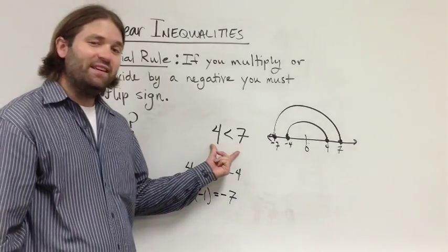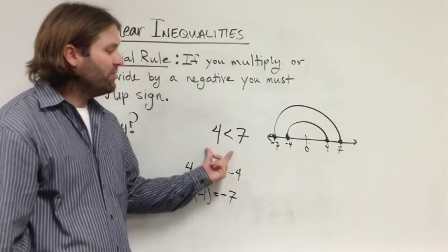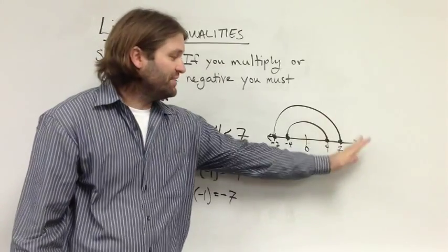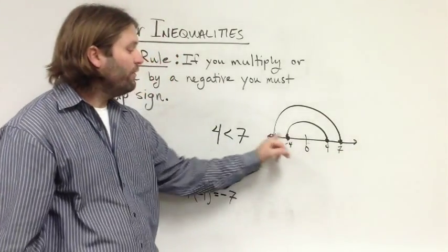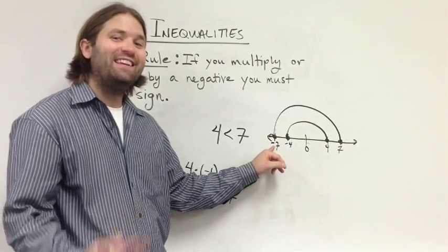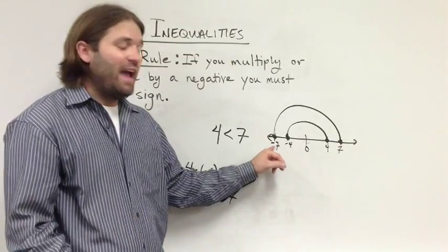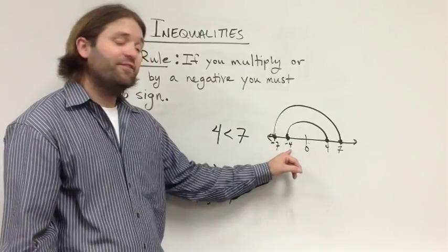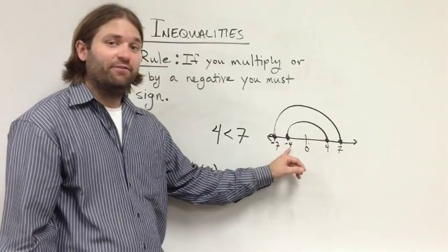What happens is this. When we multiply both sides by that negative, what was further from 0 in the positive direction is now further from 0 in the negative direction. And so, therefore, negative 7, since it's to the left of negative 4, is less than negative 4.